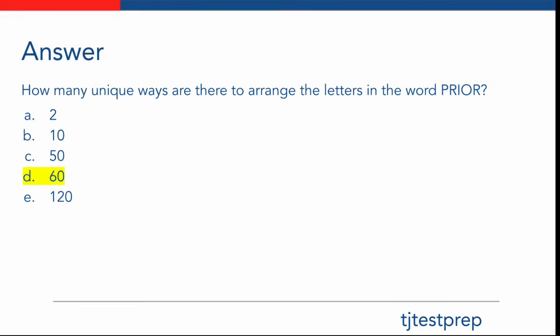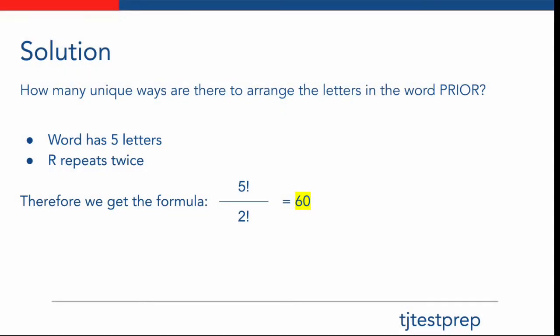The answer for this question is 60. Let's see how we came up with this answer. The number of ways to arrange something is simply its factorial. Since the word "prior" has five letters, we get 5 factorial. But the question is asking for how many unique ways. Since the letter R repeats twice, we divide by 2 factorial, leaving us with the answer of 60.